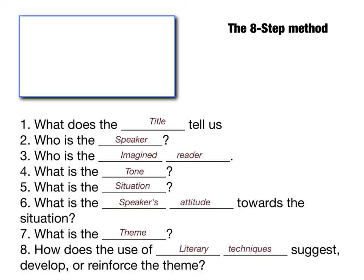A helpful hint: we always begin by reading the title. The speaker is never the author. The imagined reader is who the speaker is speaking to — the imagined audience. The tone is something you'll remember. For step five, the answer — situation — appears mentioned in step six. Similarly, in step eight, the answer to seven — theme — is contained within the question. So look at six for the answer to five, and look at eight to remember the answer to seven.